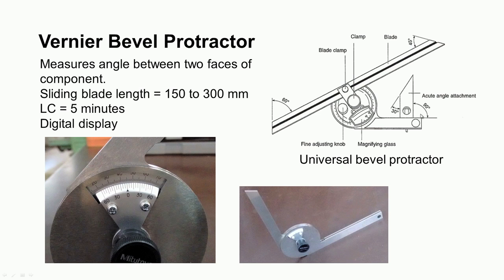There are attachments to the basic bevel protractor: an acute angle attachment at 90 degrees with a 30-degree face, and the sliding blade beveled at 45 degrees, giving a 60-degree measurement. These ends can check 45 and 60 degrees. A magnifying lens aids easy reading, and a fine adjustment knob and clamp are provided. With these attachments, the instrument is called a universal bevel protractor.